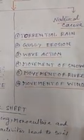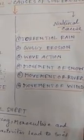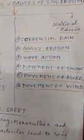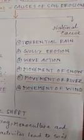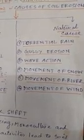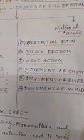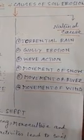Number two is gully erosion. This occurs when soil is washed away by fast-flowing rainwater on a hill slope, cutting deep channels. The fertile part of the soil is also removed.